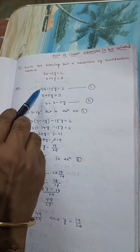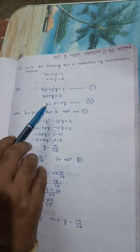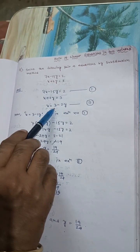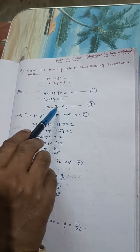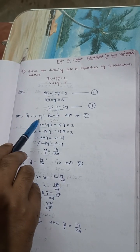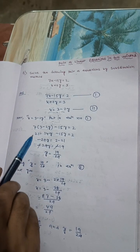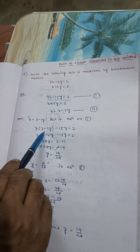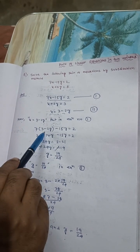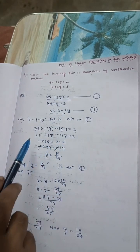Again, I repeat. The first one is equation 1, the second one, we find x equals to this. Now, putting x equals to this in equation 1, 7 times (3 minus 2y) minus 15y equals 2.